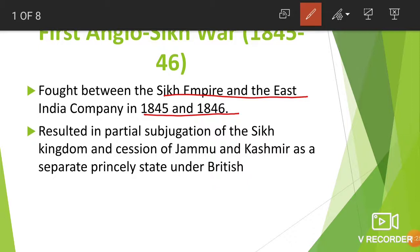The outcome of the First Anglo-Sikh War resulted in partial subjugation of the Sikh kingdom and the cession of Jammu and Kashmir, which was a part of the Sikh Empire. The Sikh Empire was very powerful at that time and was beyond the control of the Britishers, which was a sort of problem for them to take control over that kingdom.